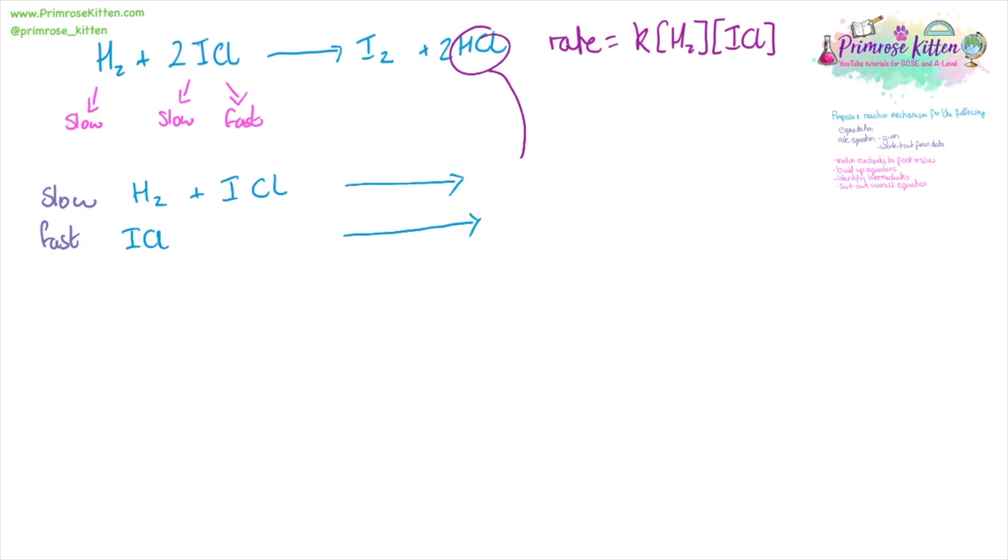Now, if we look at the products of the overall equation, we can see H2, and we can bring that down to be a product of our slow step, and looking at what we've got left over, HI is our likely intermediate in this circumstance. We can take that intermediate and put it into the fast step, and then look at our products again. We want to end up with two HCL. So there's another HCL here, and then I2.